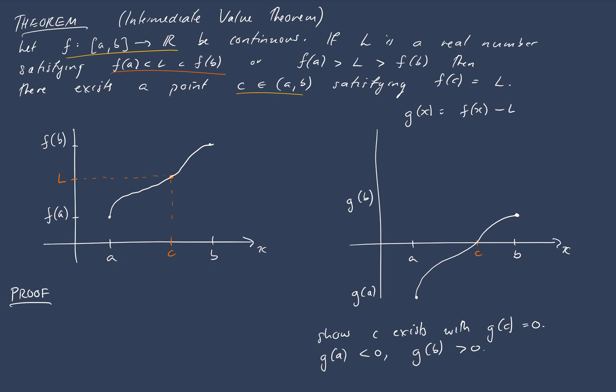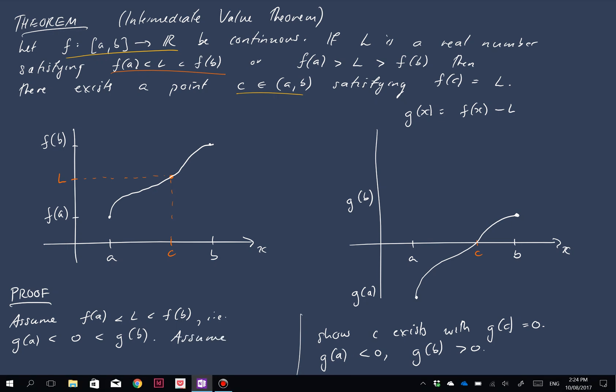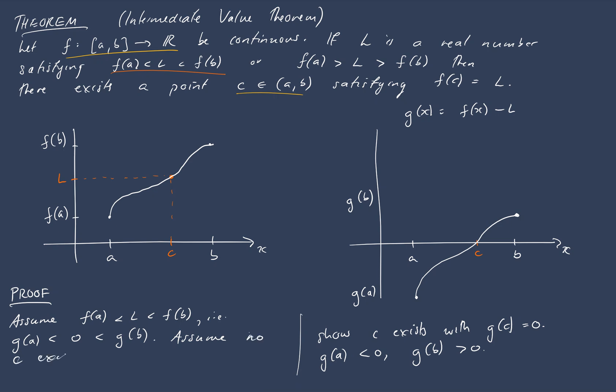So we'd better just quickly outline our assumptions. So we're assuming that f(a) is less than L is less than f(b), so we're doing this particular case here, i.e., g(a) is less than 0 is less than g(b), where g is defined just to the right here. So assume that no c exists for which g(c) equals 0.